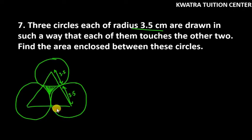First of all, you can see here there is an area of an equilateral triangle. How do you know? Because the radius of each circle is the same. And what is the side length of this equilateral triangle? It is 7 cm.